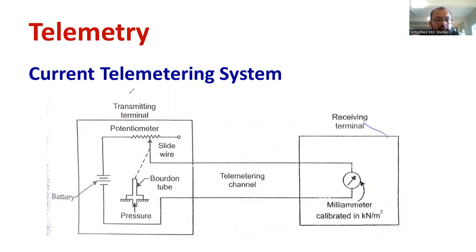The major components of current telemetry systems are: we have the transmitting terminal, second one is telemetry channel, it is wired only, remember that. Third one is called the receiving terminal. These are the major components.